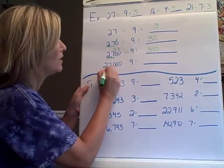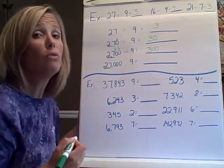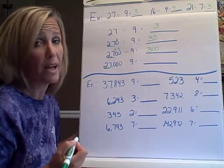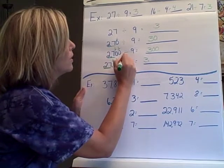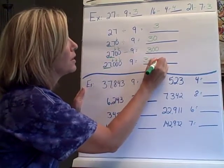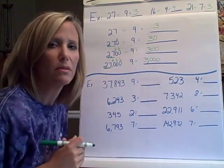Last but not least, we have 27,000. Once again, if you look at the 27, you know it's compatible by 3, or by 9, 3 times. And then if you look, you have 1, 2, 3 place values to hold. So that's 3,000. Pretty easy, huh?